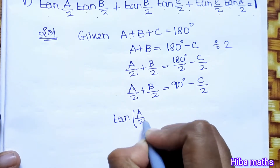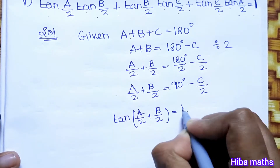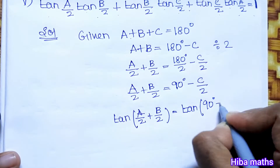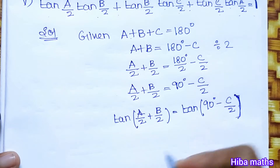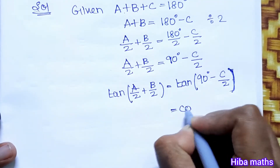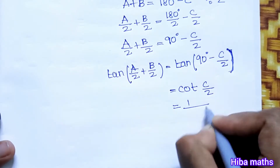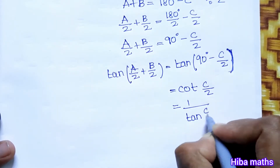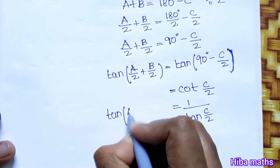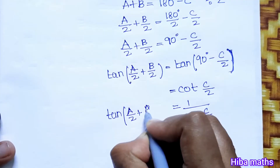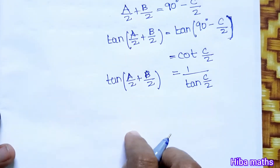Taking tan on both sides: tan(a/2 + b/2) equals tan(90° − c/2). Since tan(90° − θ) equals cot(θ), which equals 1 by tan(θ), we get tan(a/2 + b/2) equals 1 by tan(c/2). So tan(a/2) + tan(b/2) equals 1 by tan(c/2).